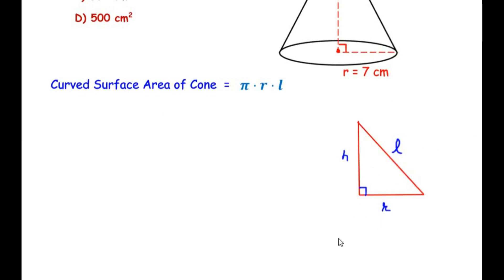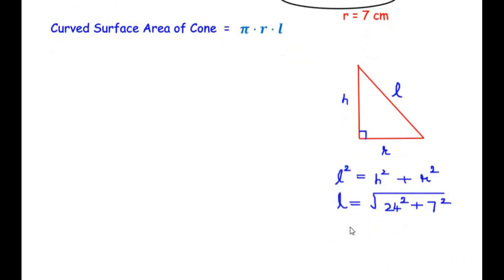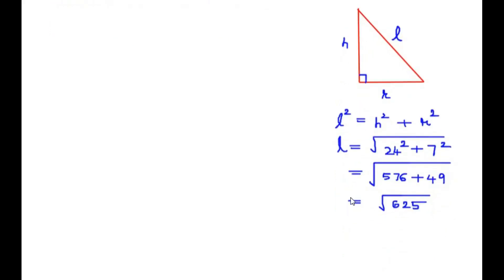So let us write down the Pythagoras theorem that is L square hypotenuse square is equal to perpendicular height square plus the radius square. So the slant height is going to be the square root of h the value is 24 so 24 square plus 7 square. So here 24 square we have is 576 plus 7 square is 49 so 576 plus 49 gives us 625 so square root of 625 is nothing but 25 so we got the slant height as 25 cm.